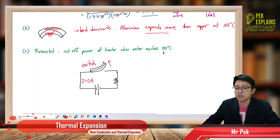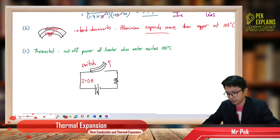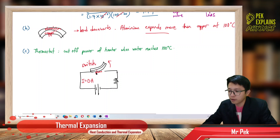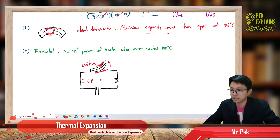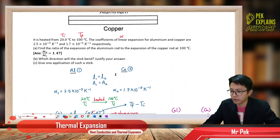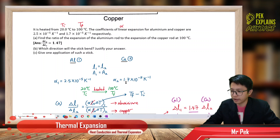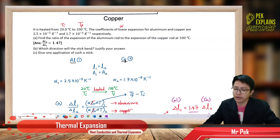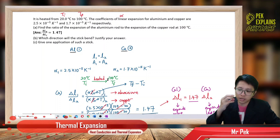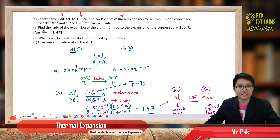When the water reaches 100 degrees Celsius the heater cuts off. From this, aluminum should be at the bottom because aluminum expands more, and copper should be at the top. From the alpha values we can already see: aluminum has a bigger alpha so it expands more, copper has a smaller alpha so it expands less, given the same change in temperature. That's it for this question — thank you for watching, see you.